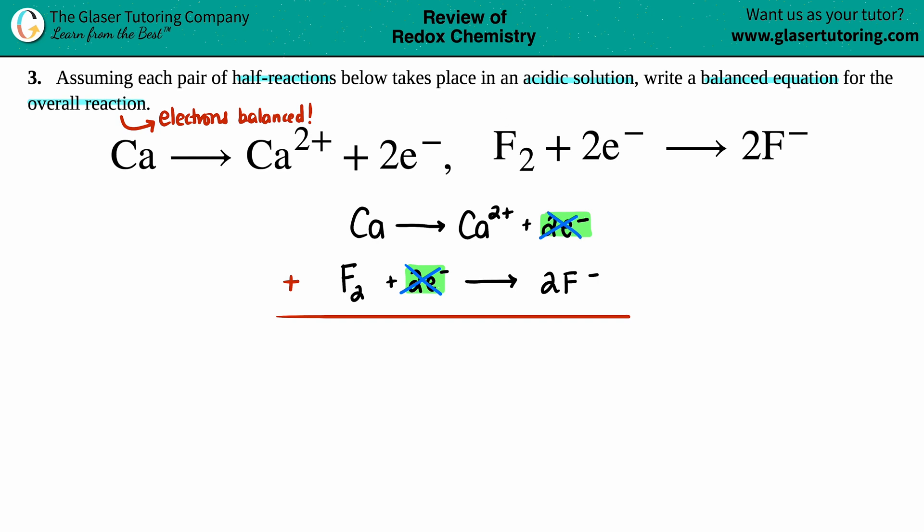But everything else has to stay exactly the same. All the substances on the left side of the yield go together: Ca plus F₂, which yields all the ones on the right side: Ca²⁺ plus 2F⁻. And that's the end. The electrons were already balanced.